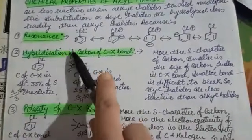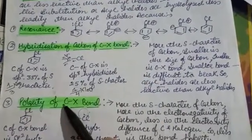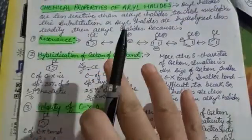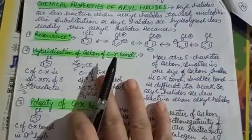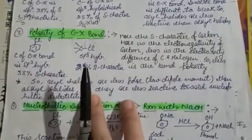So we have three reasons: resonance, hybridization of carbon-halogen bond, and polarity of carbon-halogen bond. Now we know that aryl halide is less reactive, but we still have to study chemical reactions. So we will study chemical reactions.